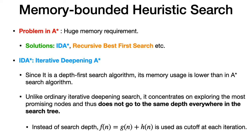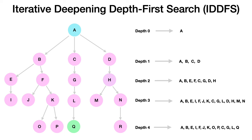In iterative deepening depth-first search, depth limit is used as a cutoff — if it reaches the depth limit, we don't go deeper. Similarly in IDA*, F(n) is used as the cutoff. If F(n) crosses a particular threshold, we don't go further deeper into the tree.